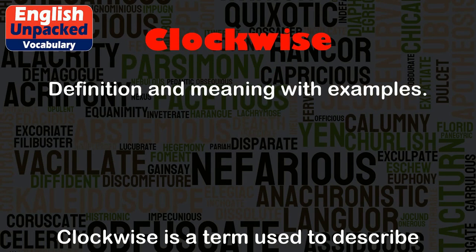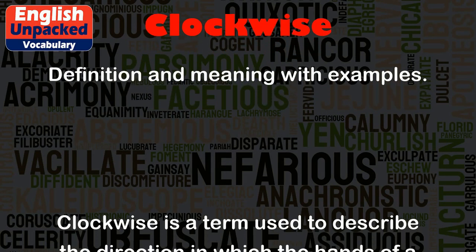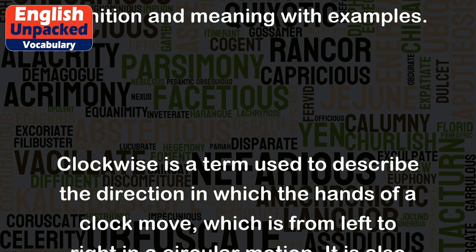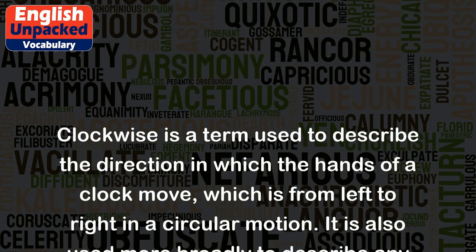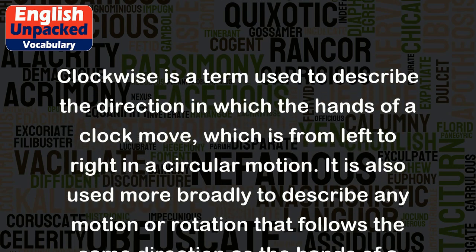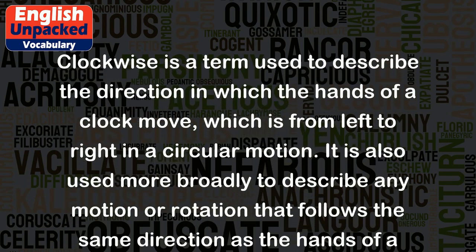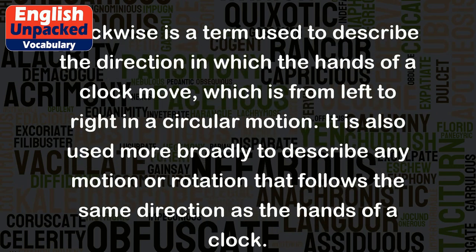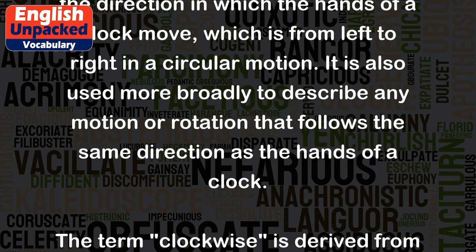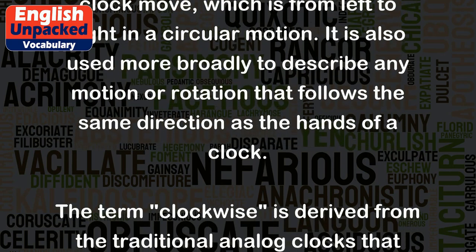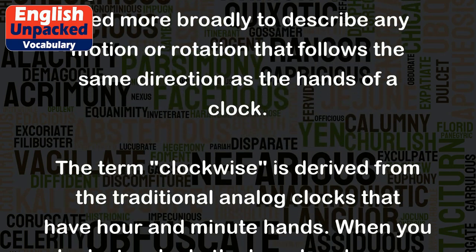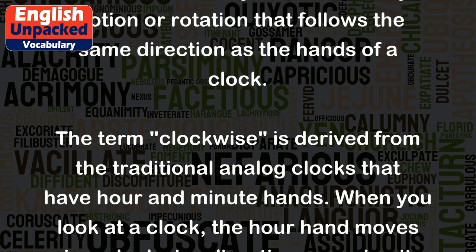Clockwise is a term used to describe the direction in which the hands of a clock move, which is from left to right in a circular motion. It is also used more broadly to describe any motion or rotation that follows the same direction as the hands of a clock. The term clockwise is derived from the traditional analog clocks that have hour and minute hands.